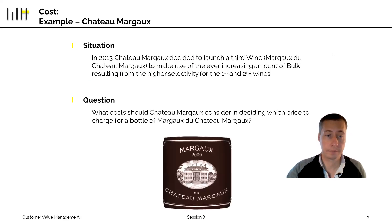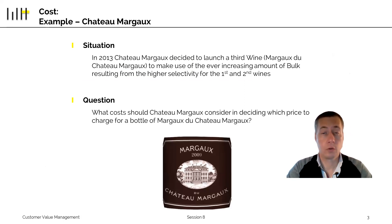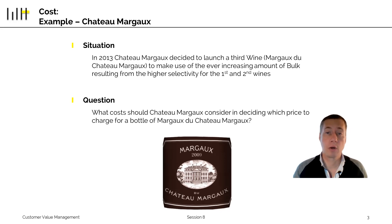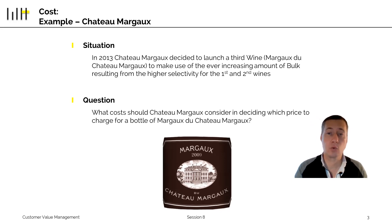Let's start with cost first. In order to do this, let's take the example of Chateau Margaux — a very famous brand of French Bordeaux wine. Chateau Margaux used to have a premium wine called the first wine, and over the years, it became more and more selective to achieve higher quality, meaning more and more grapes didn't make the cut. So at some point, they introduced a second wine to make use of the leftover grapes.